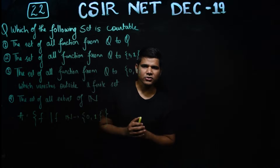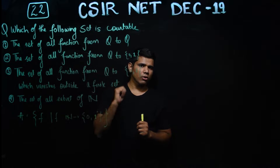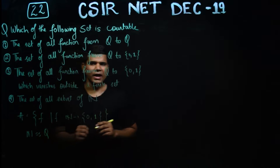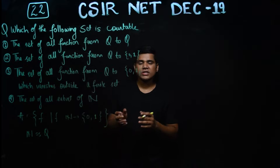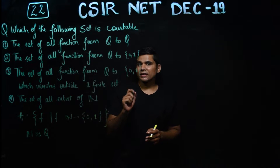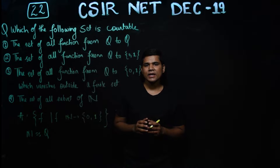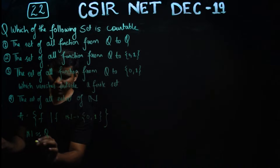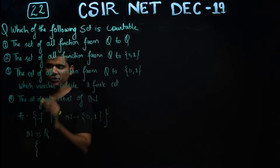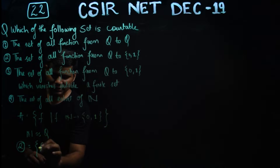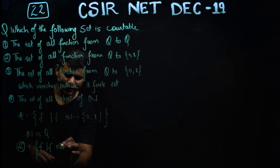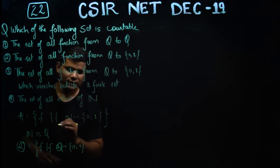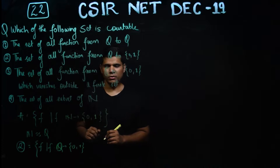Now, N is a countable set and Q (the rationals) is also countable. Since N and Q have the same cardinality, if you have a set consisting of all functions from Q to {0,1}, you can directly say that set will also be uncountable. So option 2 — the set { f : f is a function from Q to {0,1} } — is uncountable.